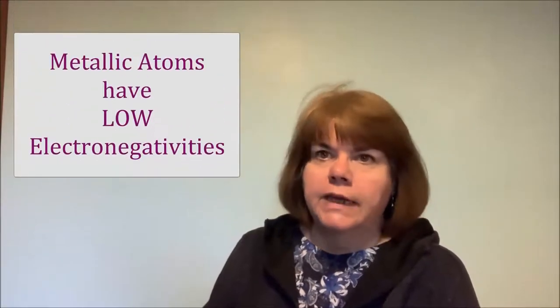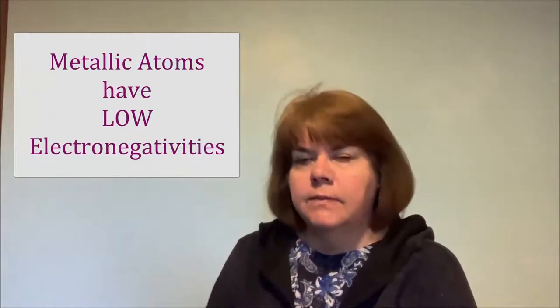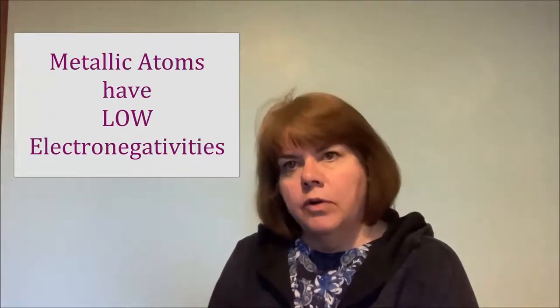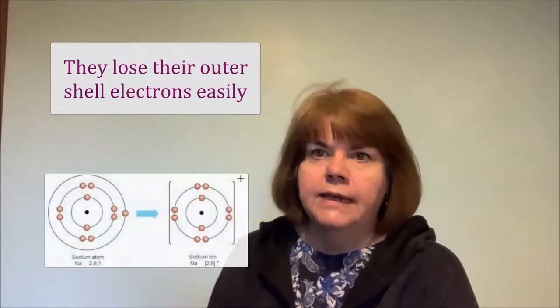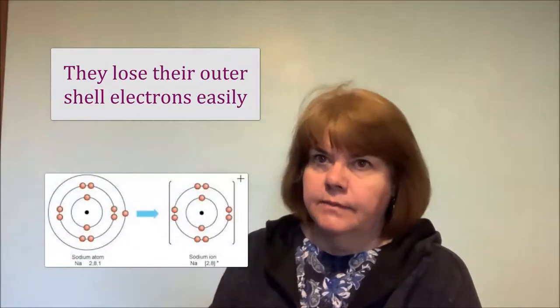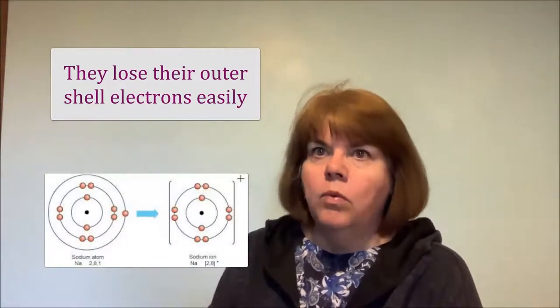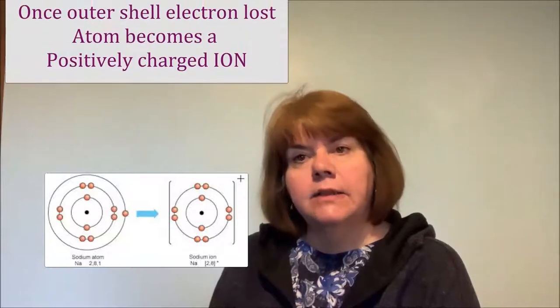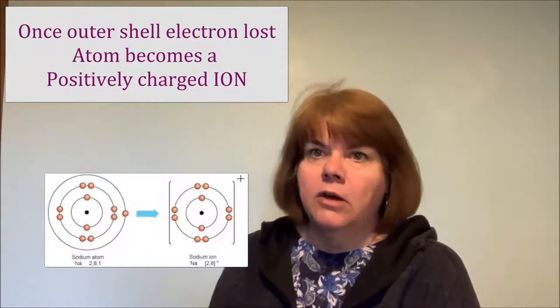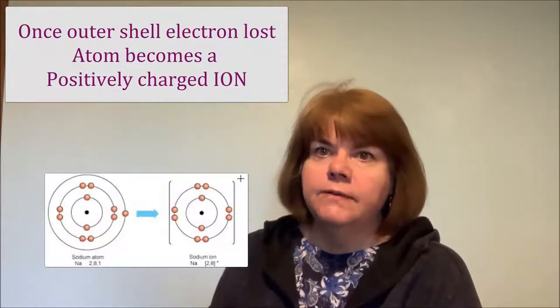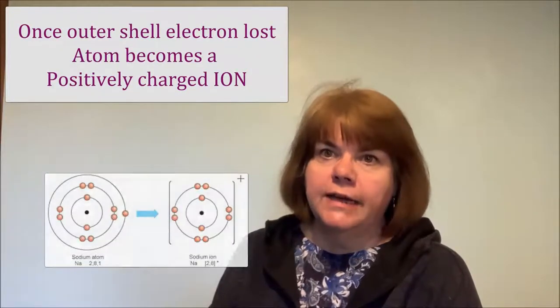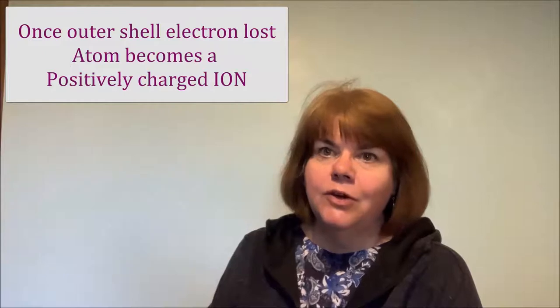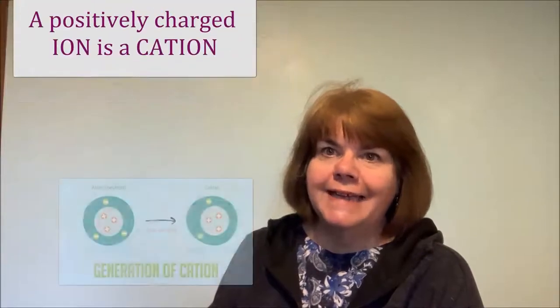Metallic atoms have low electronegativities — in other words, they lose their outer shell electrons easily. Once an outer shell electron is lost, the atom becomes a positively charged ion, in other words a cation.